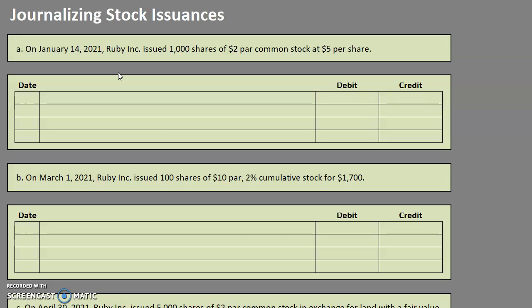Let's take a look at this first example. On January 14th, 2021, Ruby Incorporated issued 1,000 shares of $2 par common stock at $5 per share. One thing to keep in mind as a new learner: when you hear 'issuance,' almost think of it like a sale. It's not quite a sale because it's not the sale of goods — it's the sale of ownership within a company. But you are giving up the stock in exchange for cash or some other type of asset or service.